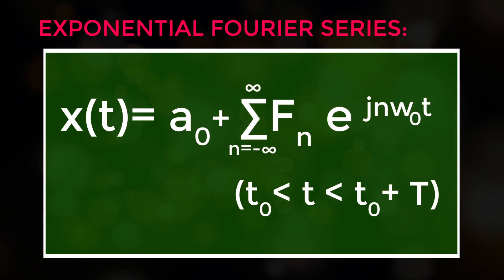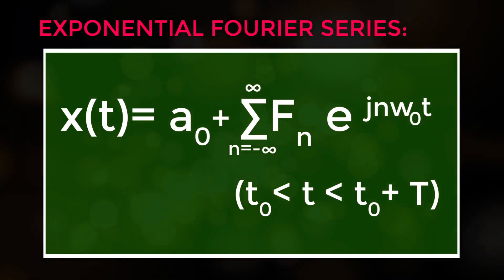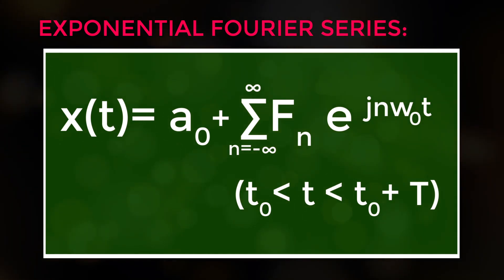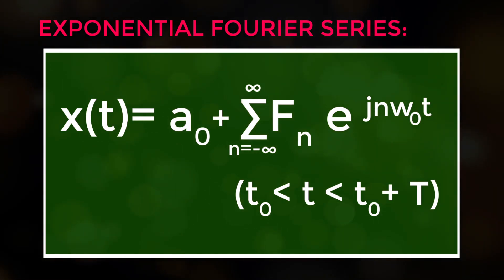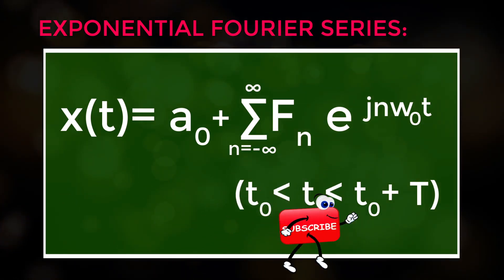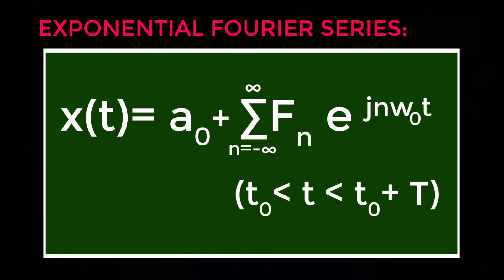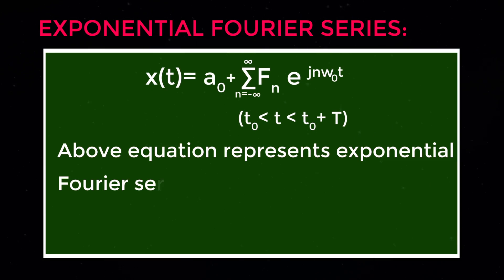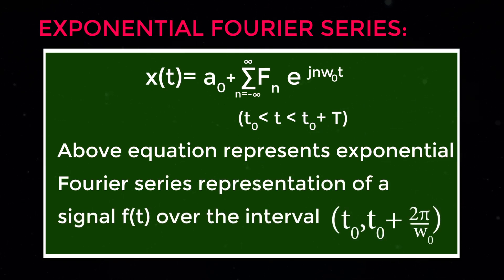Therefore, f(t) equals the summation from n equals minus infinity to infinity of Fₙ into exponential of j·n·ω₀·t, where t₀ < t < t₀ + T. This equation represents the exponential Fourier series representation of a signal f(t) over the interval t₀ to t₀ + 2π/ω₀.